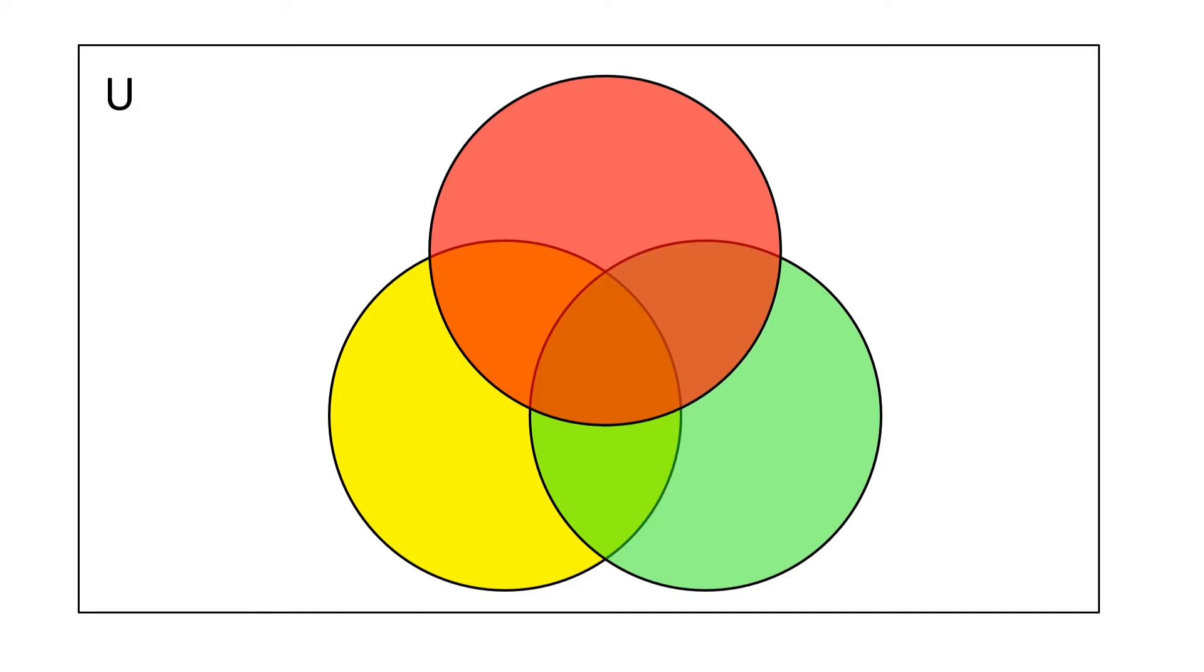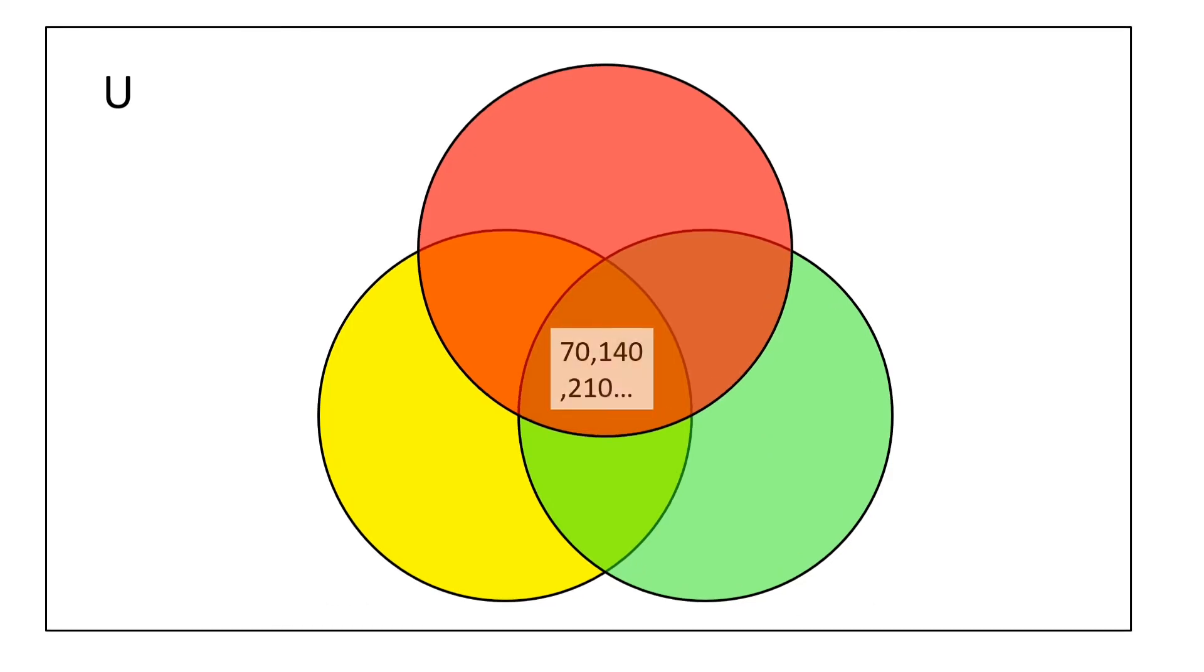The dark brown portion is the intersection of all three circles, therefore it contains those elements which are multiples of each prime factor—that is 2, 5, and 7—or we can say multiples of 70.